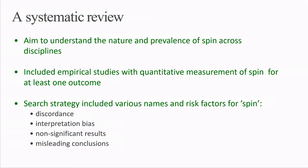We conducted a systematic review with the aim of understanding the nature and prevalence of SPIN in biomedical literature across disciplines, study designs, and clinical areas. Our questions included: how has SPIN been studied in biomedical literature, how does it manifest, what is its prevalence, and what factors may be associated with its presence? We included studies of any design, not just trials, and all outcomes where SPIN, however broadly defined, was quantitatively assessed.